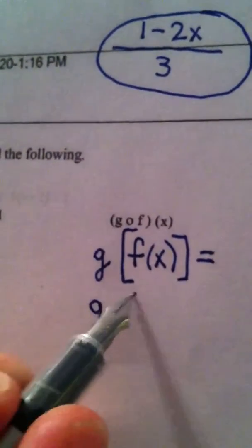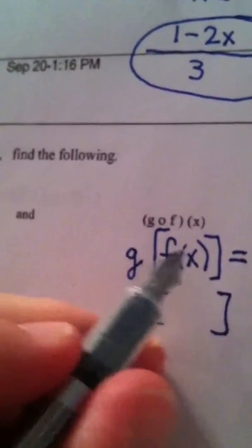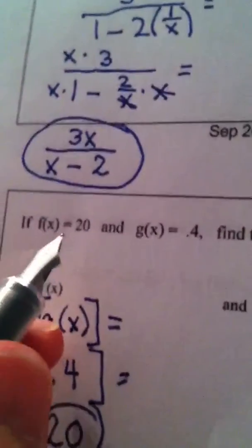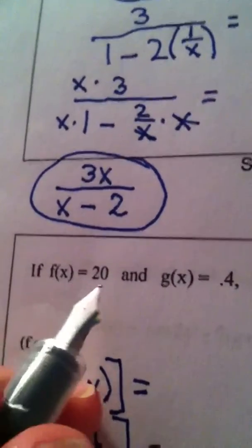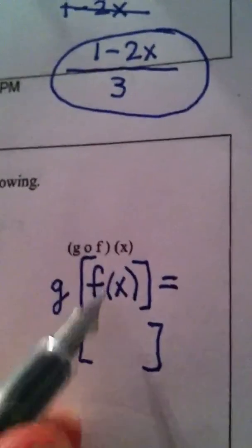Alright. Let's see what we got. f of x, f of x is constantly 20. So f of x is 20.